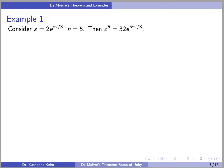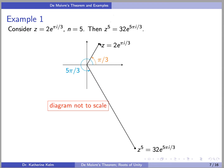Here are a couple of examples. First, consider z = 2·e^(πi/3). Then z^5 = 32·e^(5πi/3). Here's a diagram: z is at angle π/3 with magnitude 2, and z^5 is at angle 5π/3 with magnitude 32.